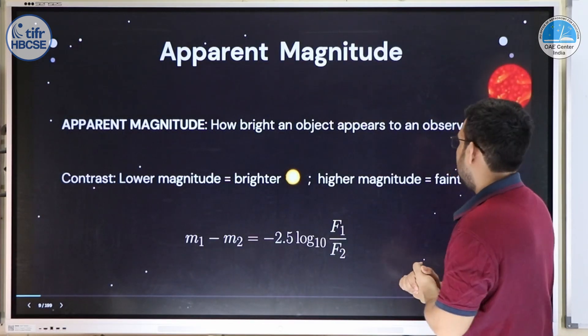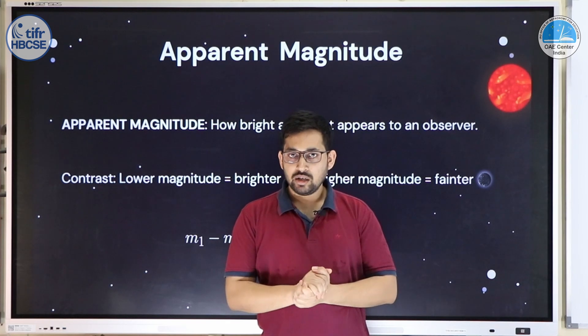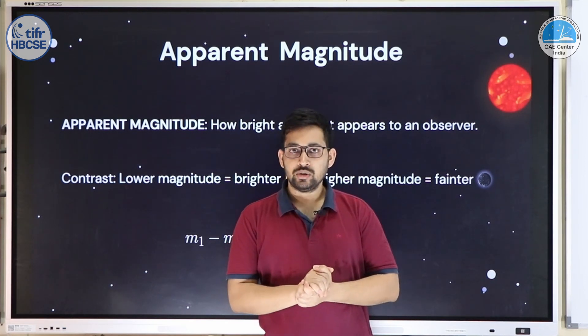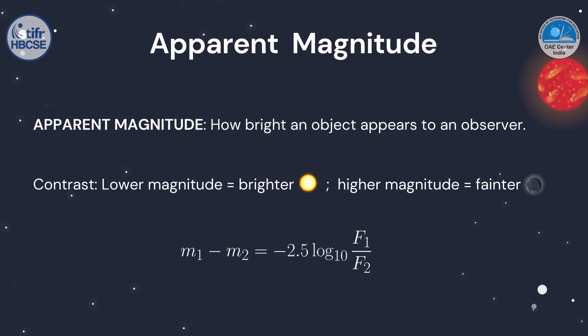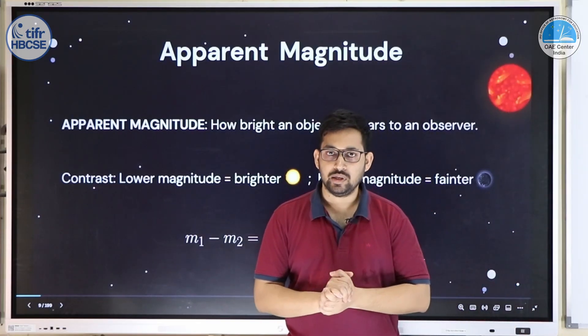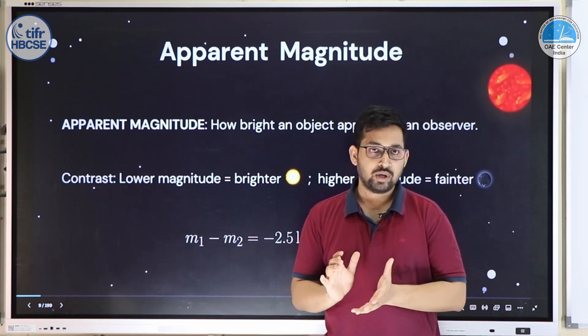Let's now define magnitude mathematically. Since magnitude is a relative quantity, we compare two stars with fluxes F₁ and F₂. The difference in magnitudes is defined as: m₁ − m₂ = −2.5 × log₁₀(F₁/F₂). The negative sign reflects that the scale is inverted — a smaller magnitude number means a brighter star. The factor 2.5 follows from convention.